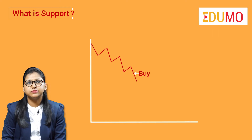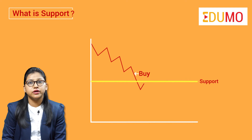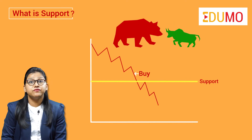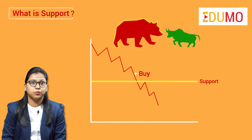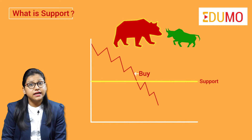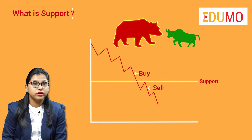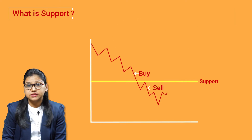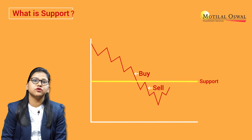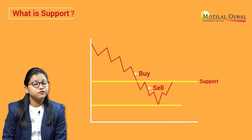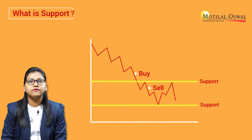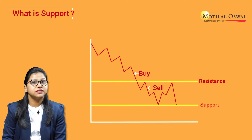Sometimes this level gets broken, which signals that the bears have won over the bulls and they are willing to sell more even at the lower prices. When the support breaks, another level of support is formed beneath that level and that level becomes resistance.